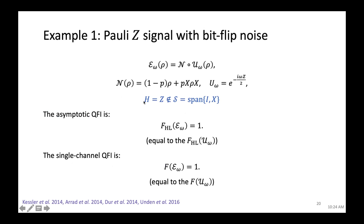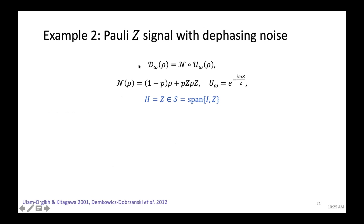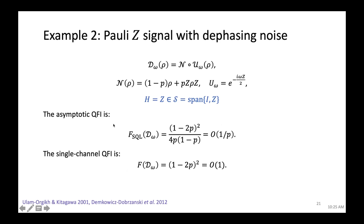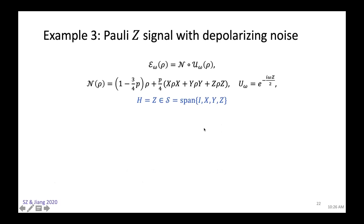The second example involves dephasing noise. Here the Hamiltonian is in the Kraus span, so we are in the SQL case. The asymptotic QFI is proportional to 1/(1−p), where p is the error rate. For a single channel the QFI is just a constant, demonstrating the non-additivity of the single-channel QFI. No quantum error correction is needed; we can just use a spin-squeezed state.